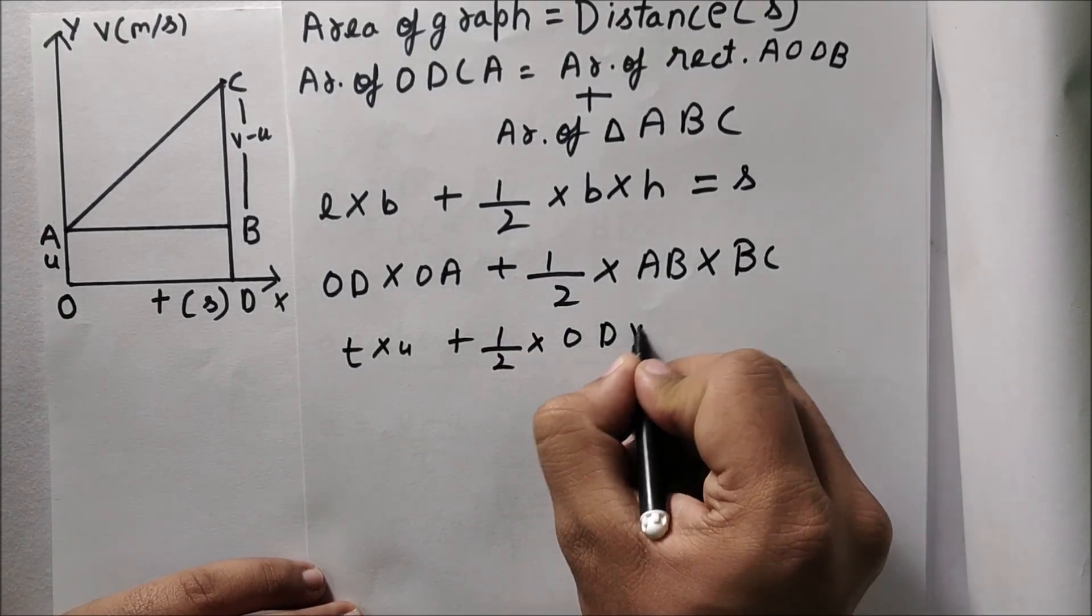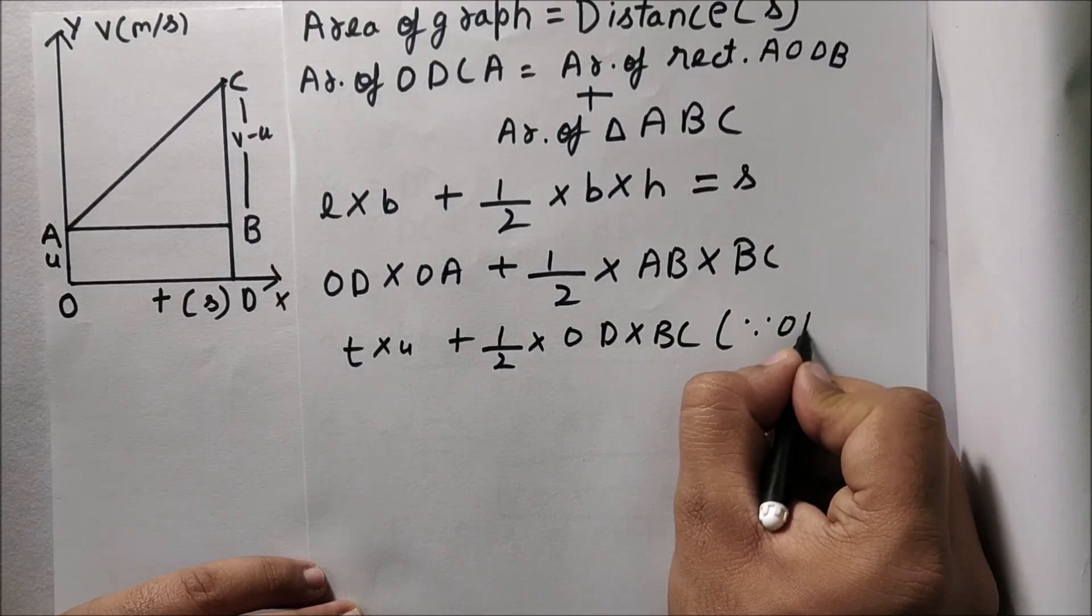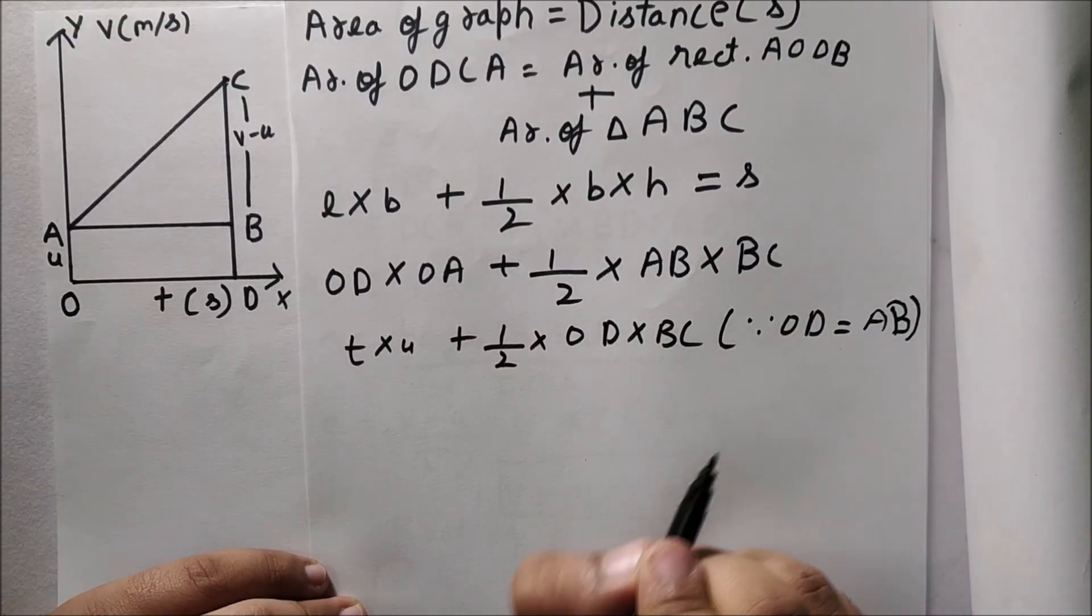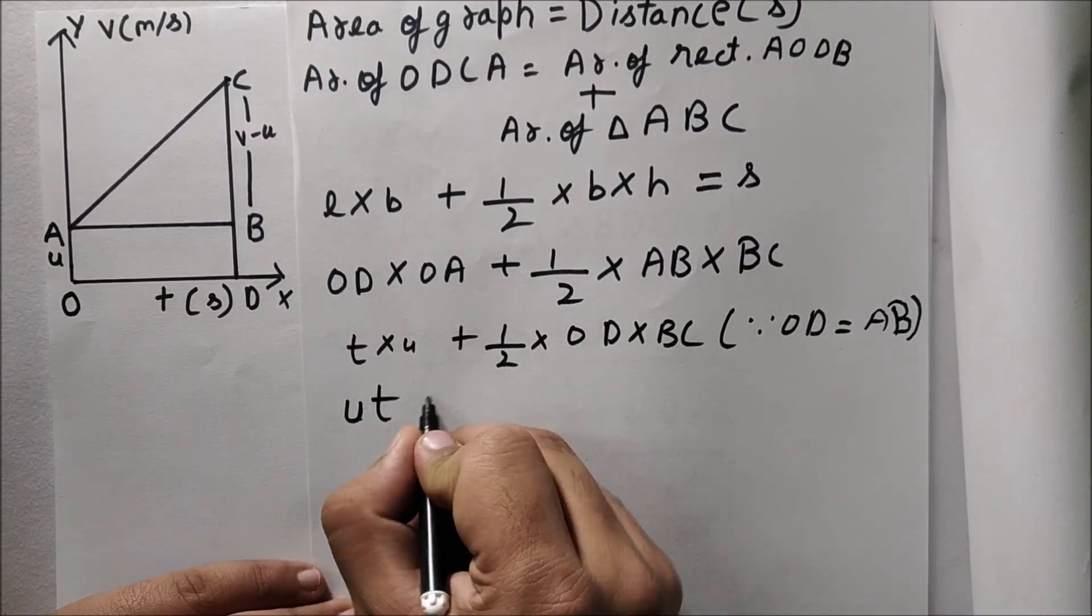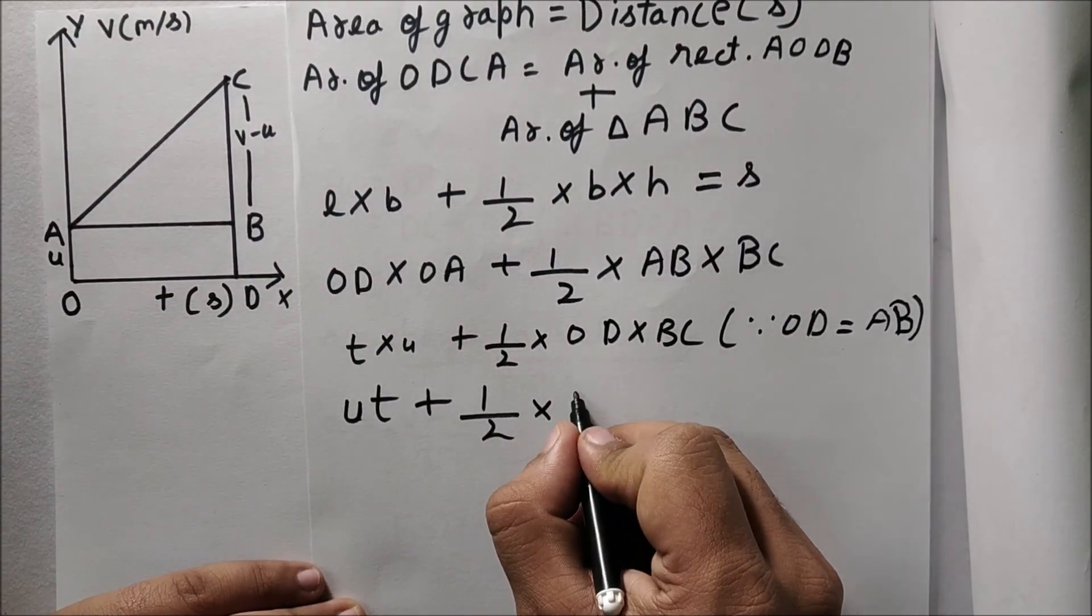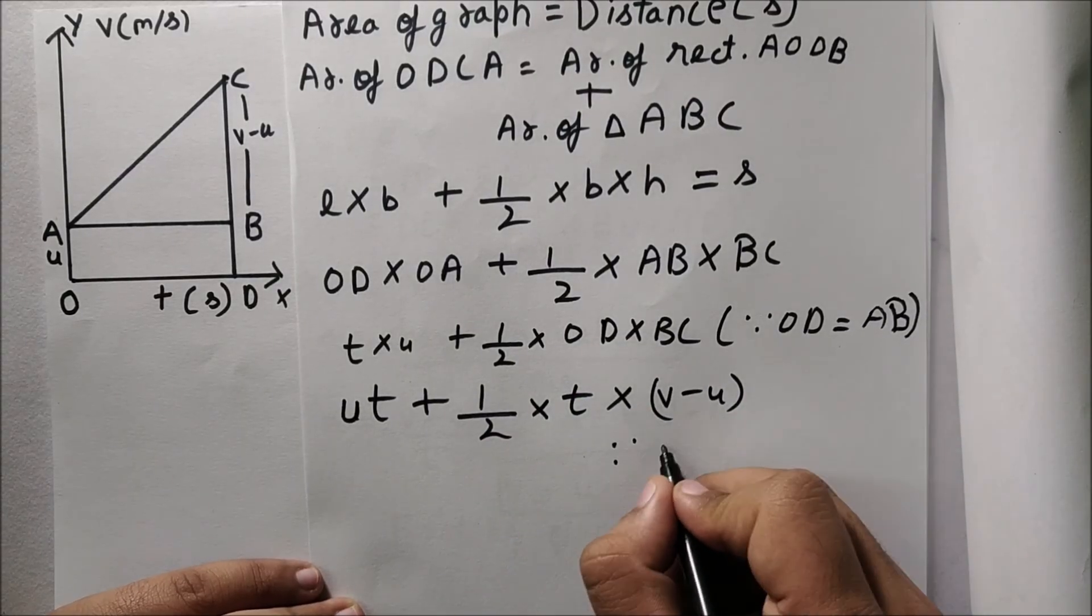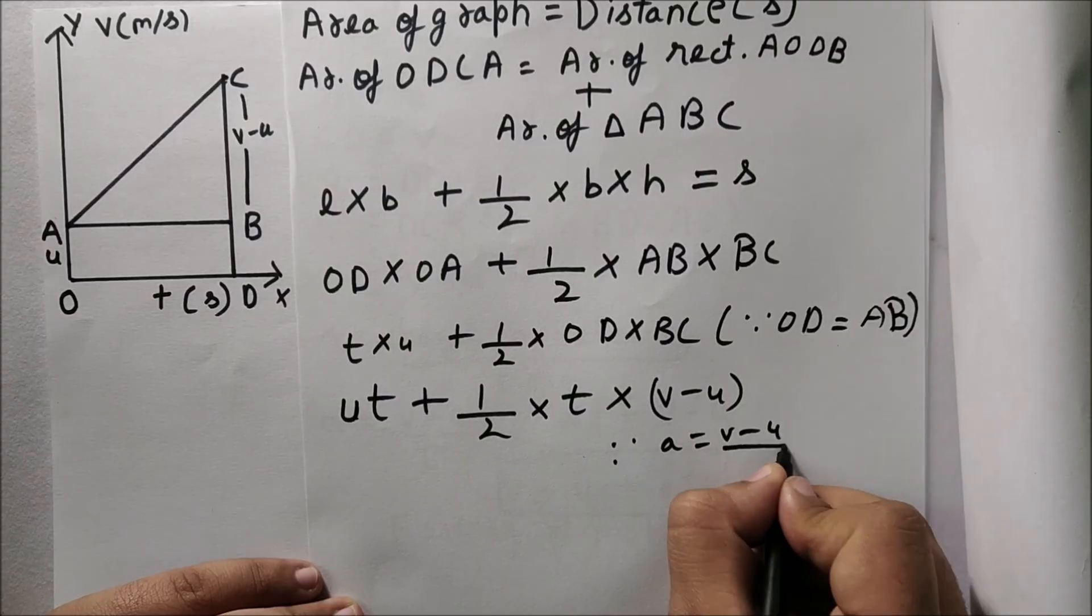AB is equal to OD because it's parallel, and BC we know that it's v minus u. So let us put the value, that's ut plus half into t into v minus u.